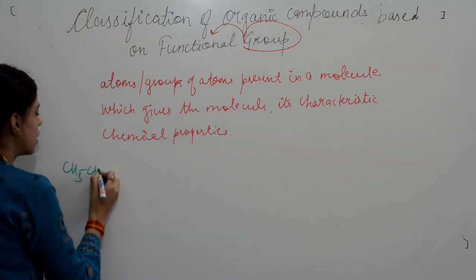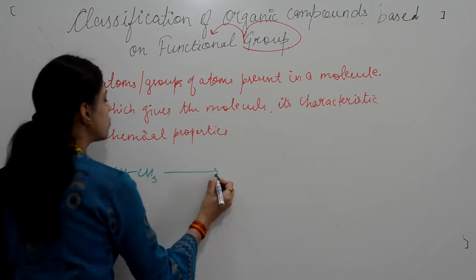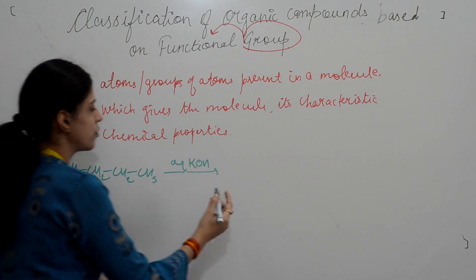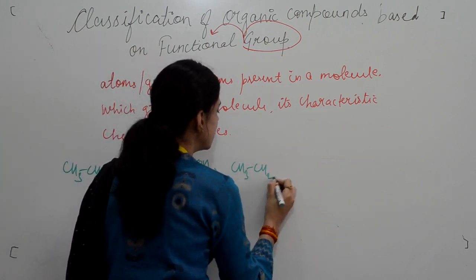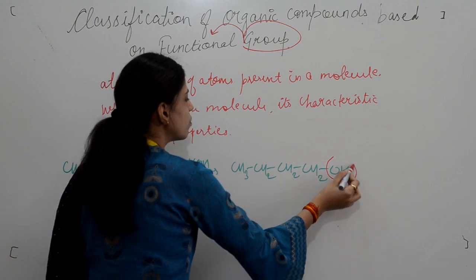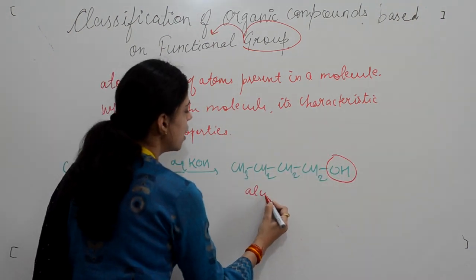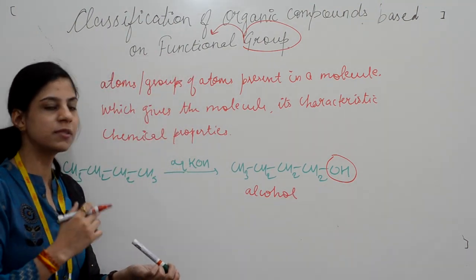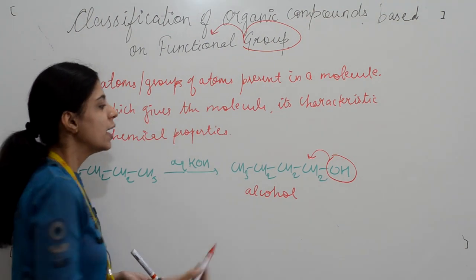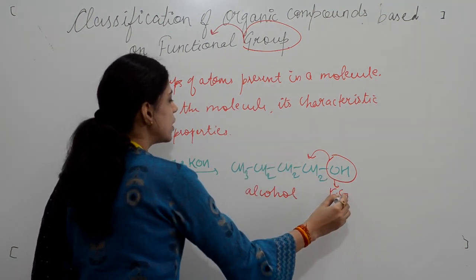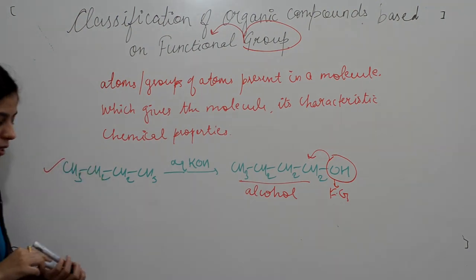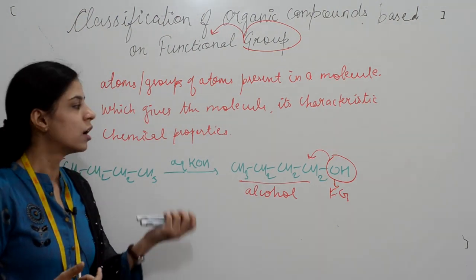For example, if I take butane and react it with aqueous KOH — this is just a hypothetical equation — I will get a new product: CH2CH2OH. With the introduction of this OH group, this compound is no longer butane. Now it is an alcohol. The compound will now be known as butanol.